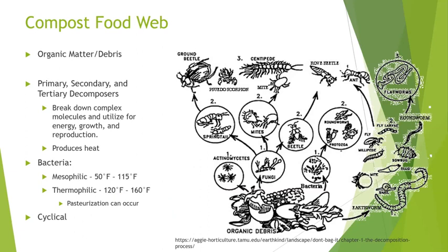At this temperature range, the decomposition process occurs much more rapidly. Also, if these elevated temperatures are sustained, it can produce the effect that substantially decreases pathogens and weed seeds within the compost. After an unspecified period of time based on conditions and organic energy available, the compost pile will begin to cool down, allowing non-thermophilic decomposers to enter the system. At this warm but not hot stage, fungi, actinomycetes, and protozoa will begin to move in and feed on the established bacterial colonies.